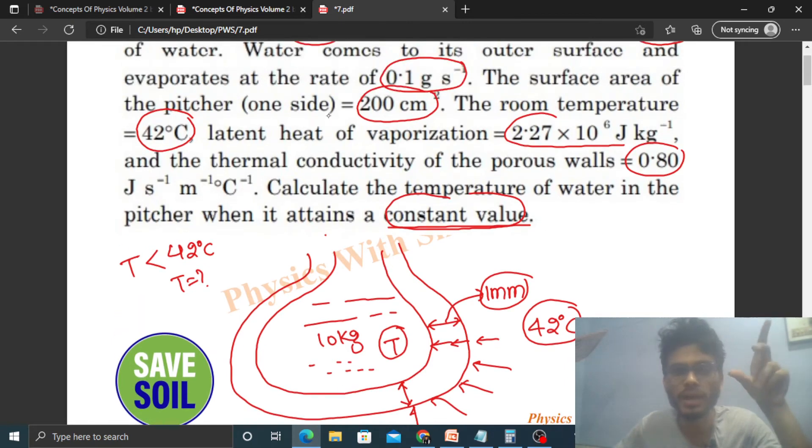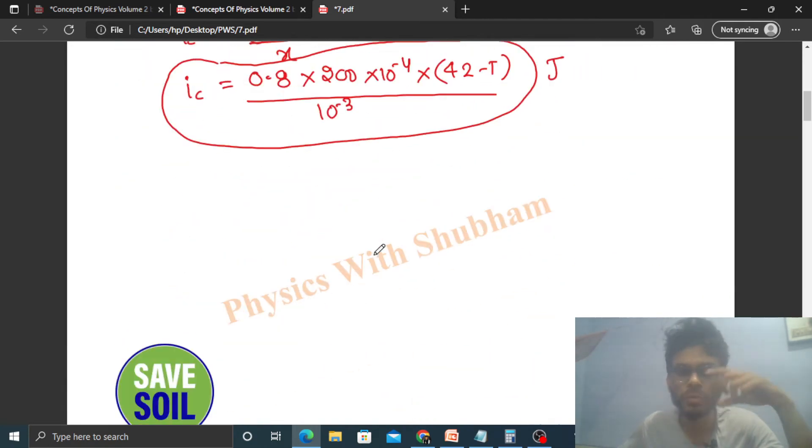The evaporation rate is 0.1 gram per second. In one second, 0.1 gram of water evaporates.